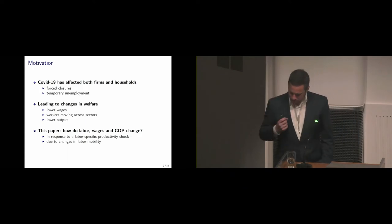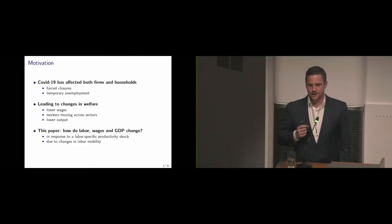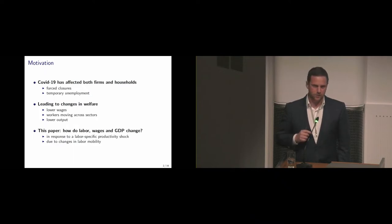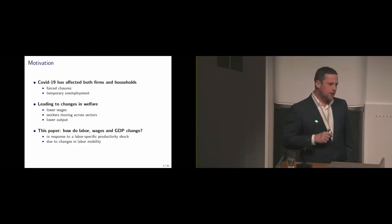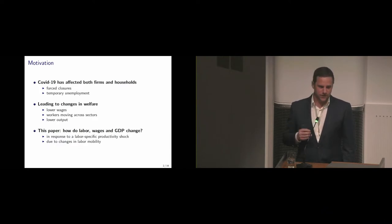The starting point of this thought experiment was that on top of a massive health crisis globally, COVID-19 has affected real output — both firms and households — in the sense that firms were shut down during the first lockdowns or had reduced activities. This also led to temporary employment schemes because people were put on furlough schemes or temporary contracts which did not get renewed, or people were going to work less to take care of kids at home. This of course leads to large changes in welfare: people working less may have lower wages in nominal terms, or they're forced to move across sectors in response to being laid off, which lowers their wages as well, and it has an impact on the whole output of the economy.